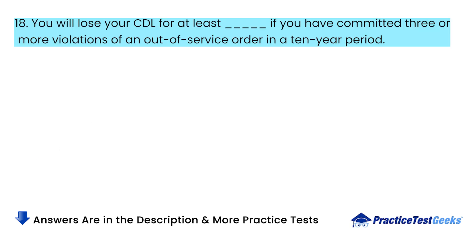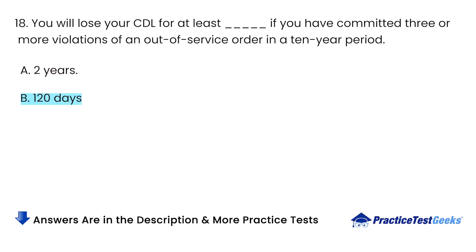You will lose your CDL for at least how long if you have committed three or more violations of an out-of-service order in a 10-year period? A. Two years. B. 120 days. C. One year. D. Three years.